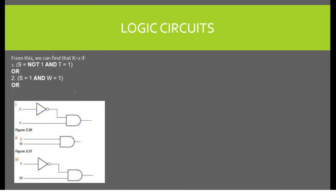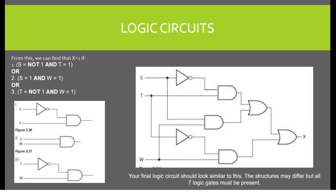From the conditions above, we can create the following gates. By combining the gates together, we get a logic circuit which would be similar to the one on the right. Although the structure may differ depending on where you place the inputs, all seven logic gates must be present in the correct order. From this logic circuit, we can create a truth table with the results on the right.